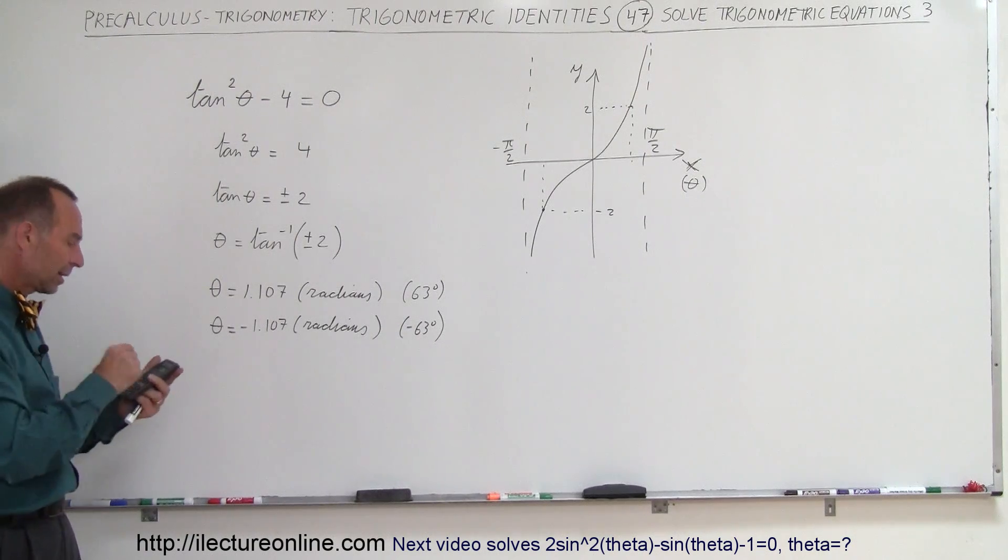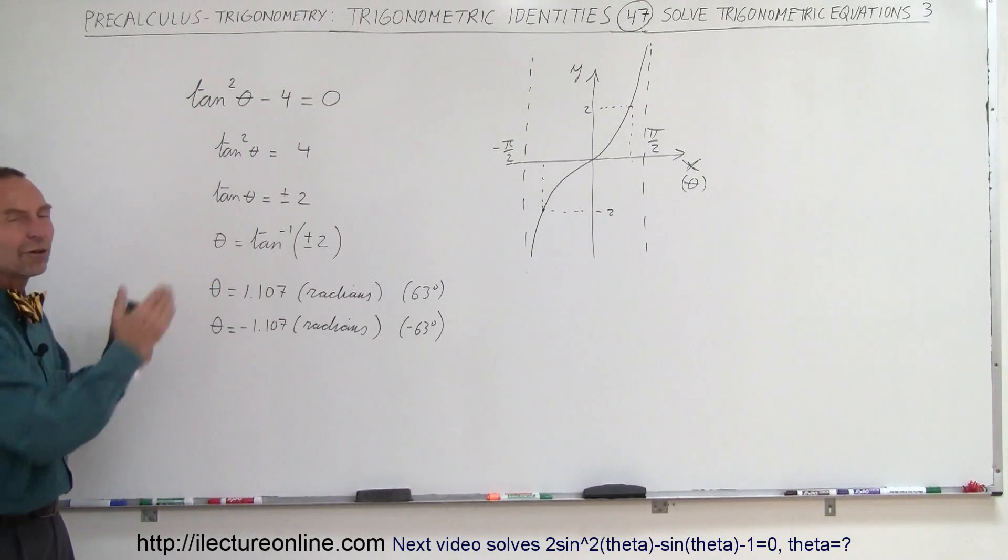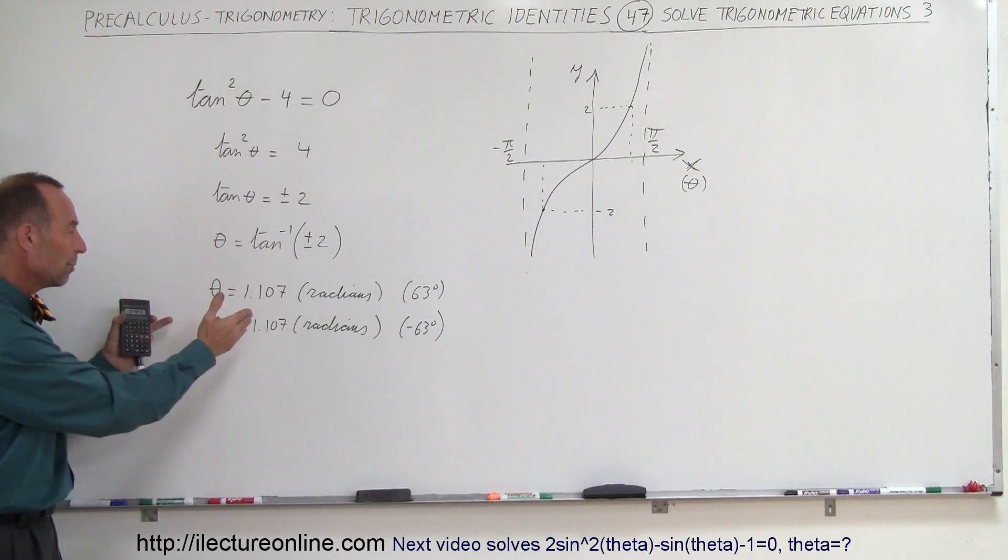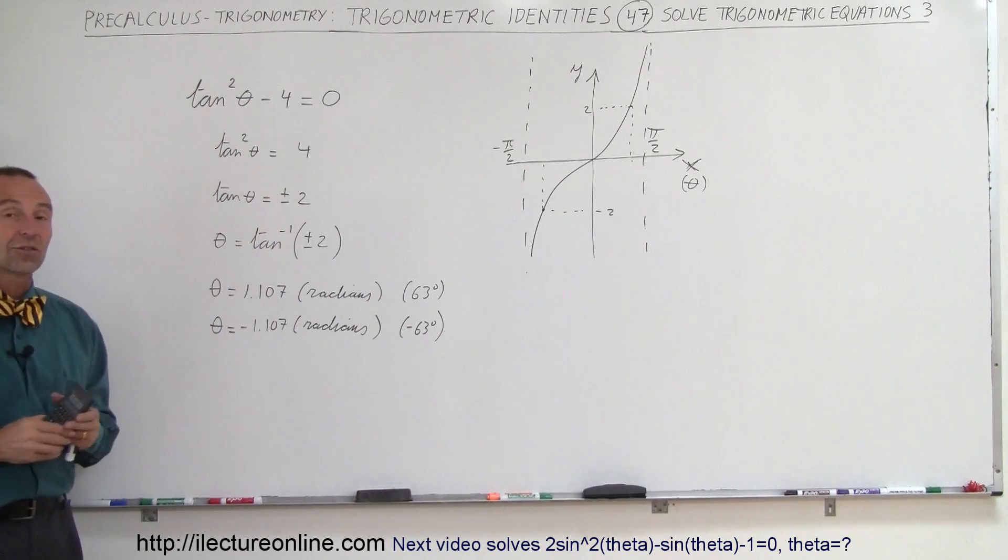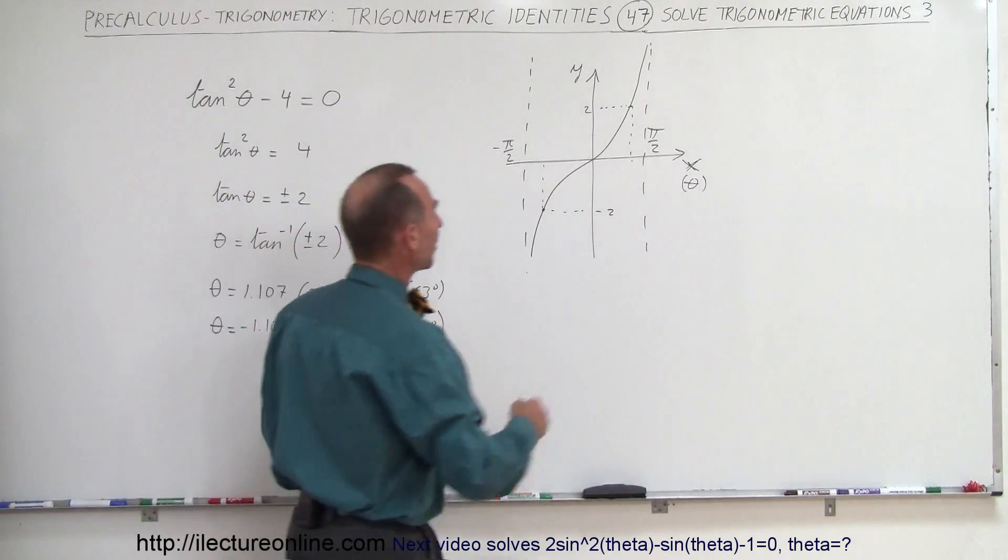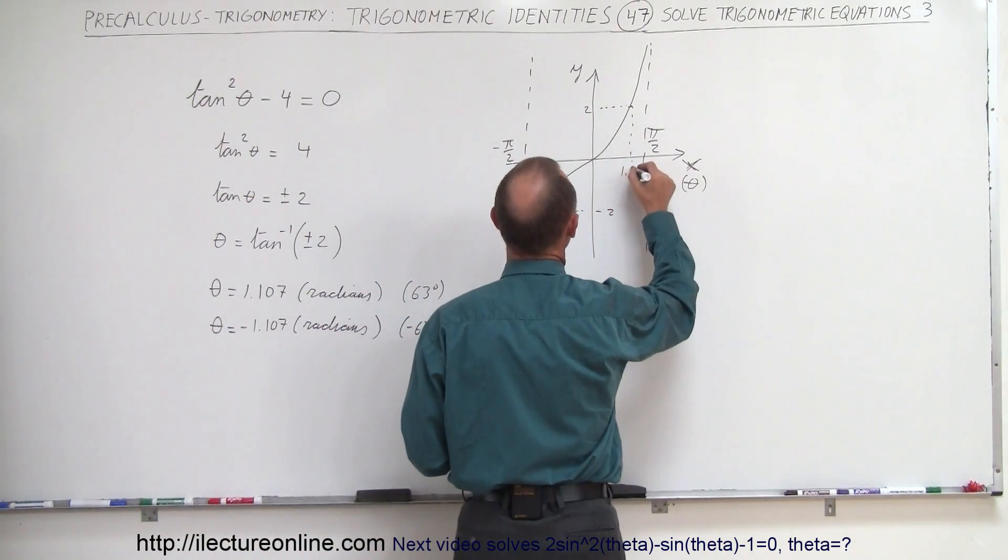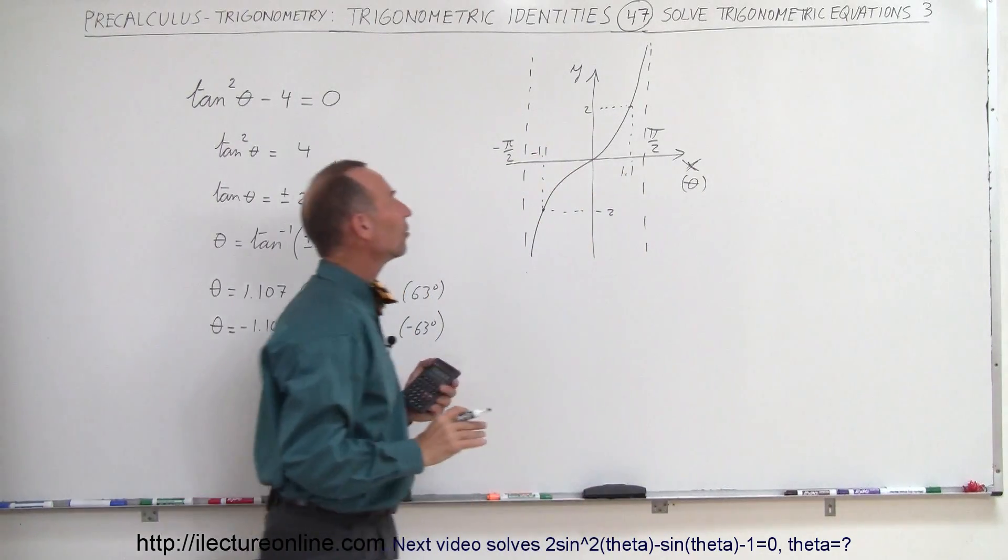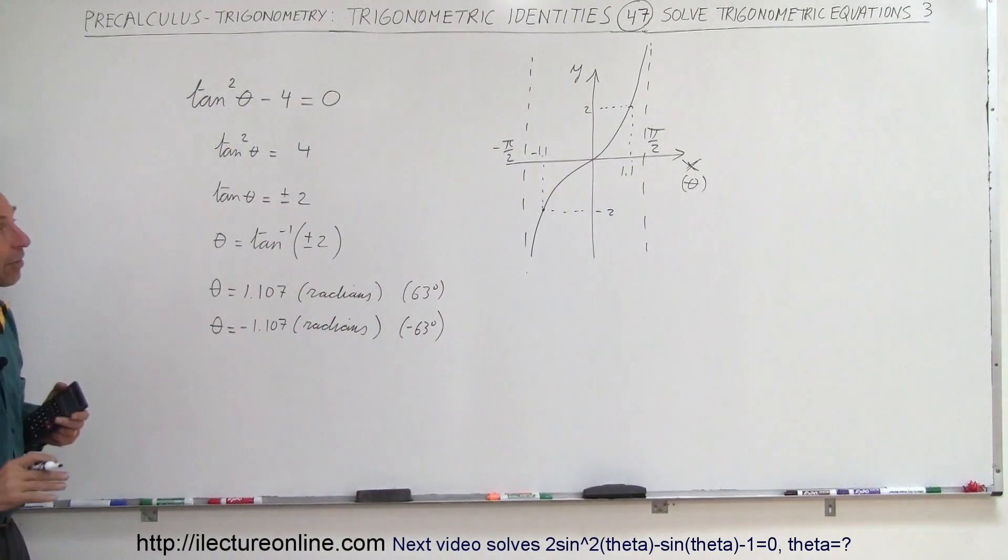So it's not simply plugging into your calculator and seeing what number you get. You also want to get a feel for what it looks like on the graph so that you can have a relationship between the numerical answers you're getting and what it looks like on the graph. And so when we want to do that, that means that this would be 1.1 and this would be minus 1.1 in radians for the angle value. And that's how we do that.